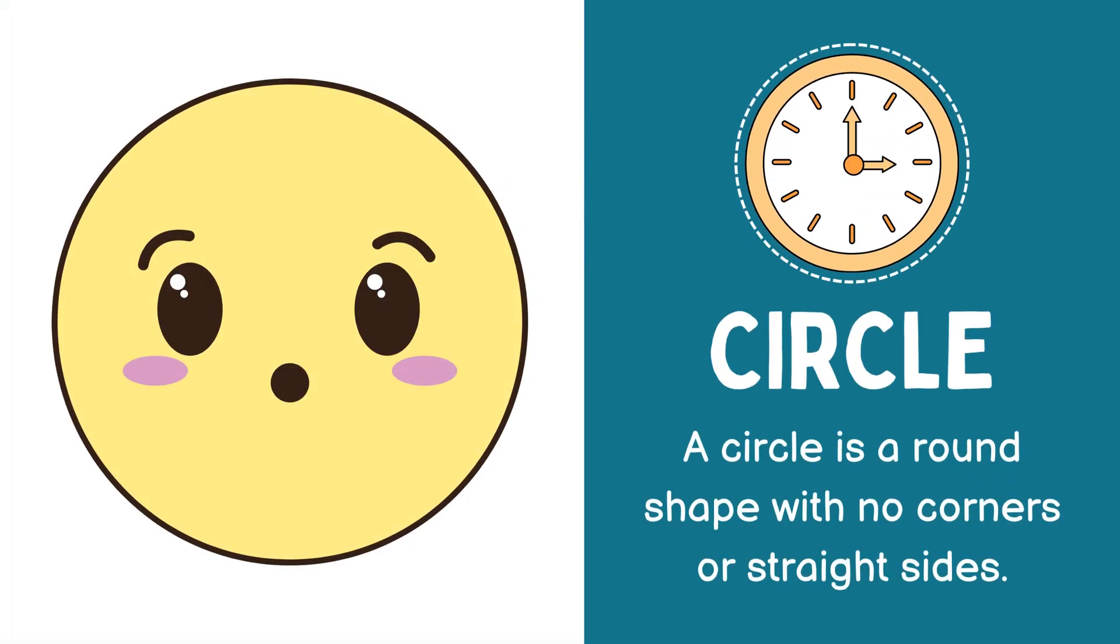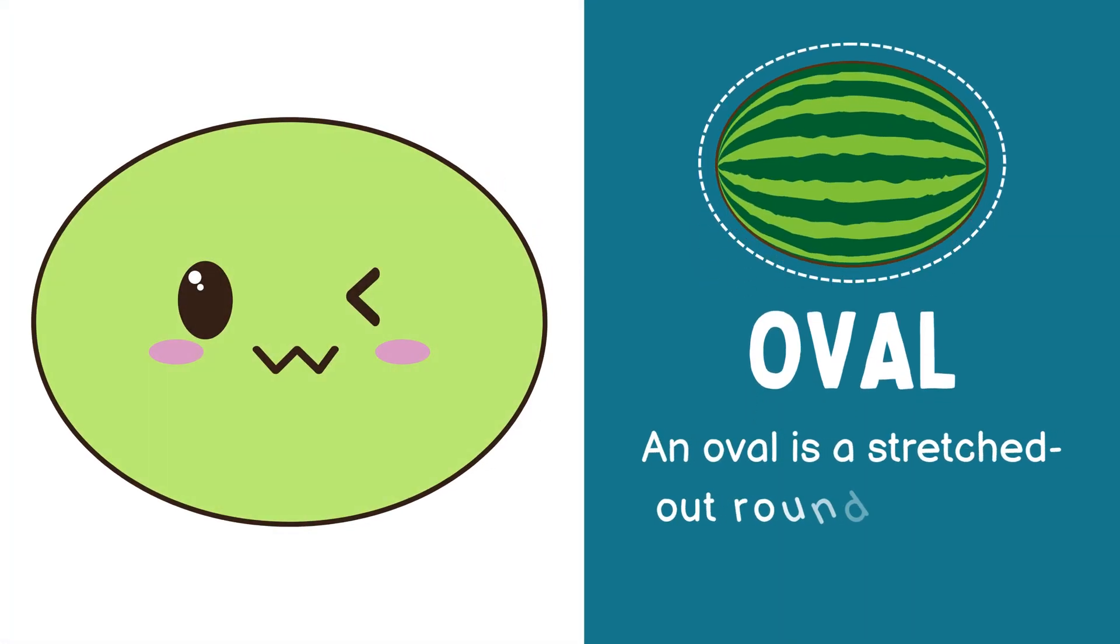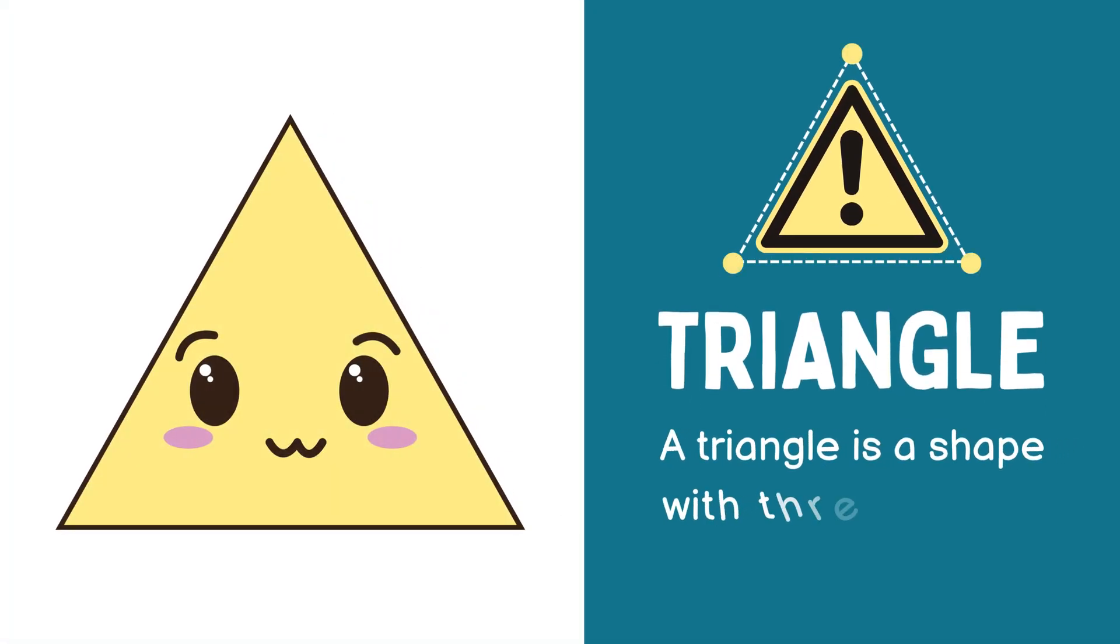First shape, circle. A circle is a round shape with no corners or straight sides. Next shape, oval. An oval is a stretched out round shape with no corners. Next shape, triangle. A triangle is a shape with 3 sides and 3 corners.